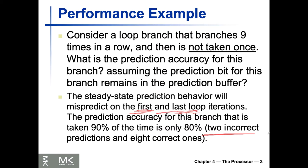Consider a loop that branches nine times in a row and then is not taken once. That's the one-bit predictor — on average in a steady case we're going to lose two predictions: two mispredictions.